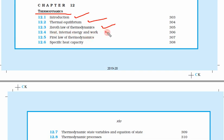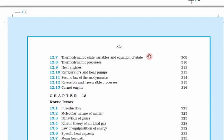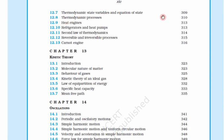The zeroth law of thermodynamics, heat, internal energy and work — what these mean in terms of thermodynamics. We have three laws: zeroth, first, and second. The first law of thermodynamics, specific heat capacity in thermodynamic terms, thermodynamic state variables and equation of state, thermodynamic processes, and heat engines — how the engines used in cars and buses work.